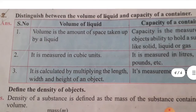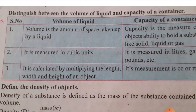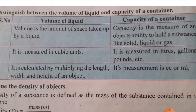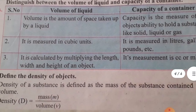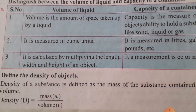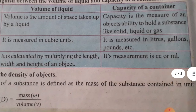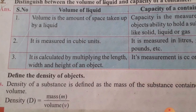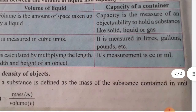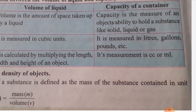Second brief answer: distinguish between volume of liquid and capacity of a container. Volume is the amount of space taken up by a liquid, measured in cubic units, and calculated by multiplying length, width, and height. Capacity is the measure of an object's ability to hold a substance — solid, liquid, or gas — and is measured in liters, gallons, or CC (cubic centimeters) or milliliters.